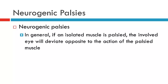An important feature of neurogenic palsies is that the eye will be deviated in primary position opposite to the action of the palsied muscle. If the abductor — the lateral rectus — is palsied, the eye will be adducted in primary position, meaning an esotropic eye. This is because with the lateral rectus palsied, the ipsilateral antagonist, the medial rectus, remains unopposed and adducts the eye further, producing an esotropia.